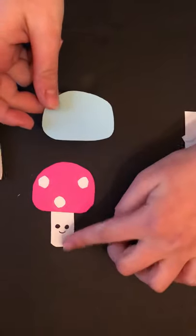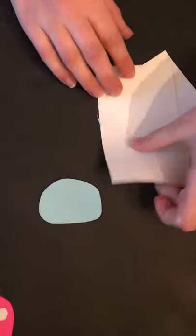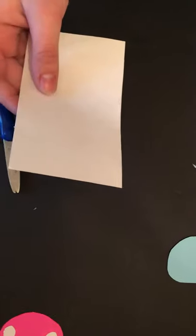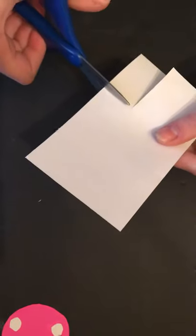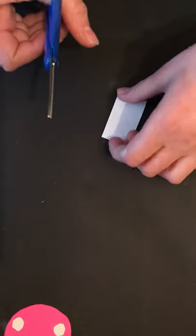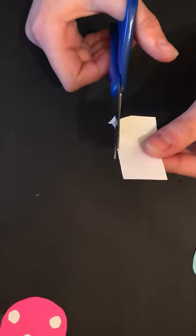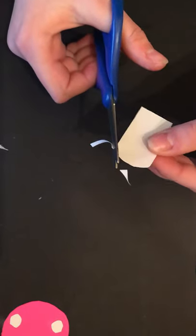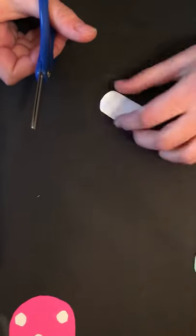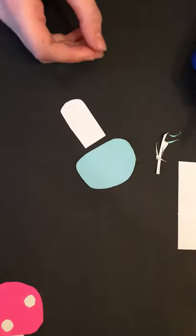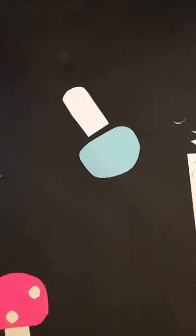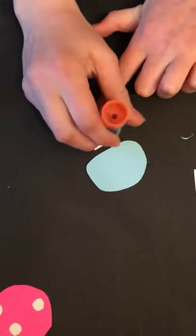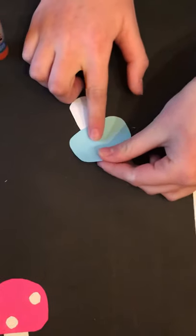Now we're going to make this white part. So take a piece of your white paper and set the piece that you just cut aside. And you're going to cut a rectangle and round the edges again like you did for the other piece. It doesn't matter how long it is because you're going to glue it in the back like this. So then you have this and we're going to glue it together. So put glue right here at the top of your white and then just stick it on right here.